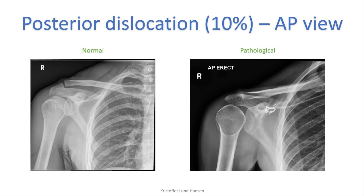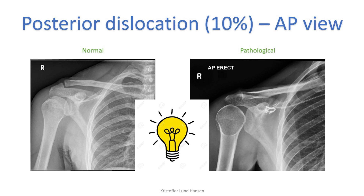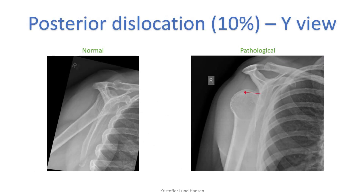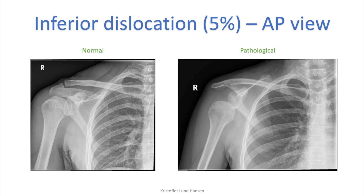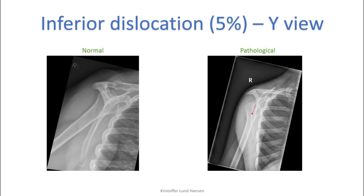Posterior dislocations are the second most common type. A classical sign here is called the light bulb sign — if you look at the pathological picture the head of the humerus forms something that looks like a light bulb, which should prompt suspicion of a posterior dislocation. On the Y view, watch the bifurcation and evaluate the location — in the example it is located both posteriorly and a little inferiorly. Inferior dislocations are rare, below five percent of shoulder dislocations, but again always confirm on the Y view.